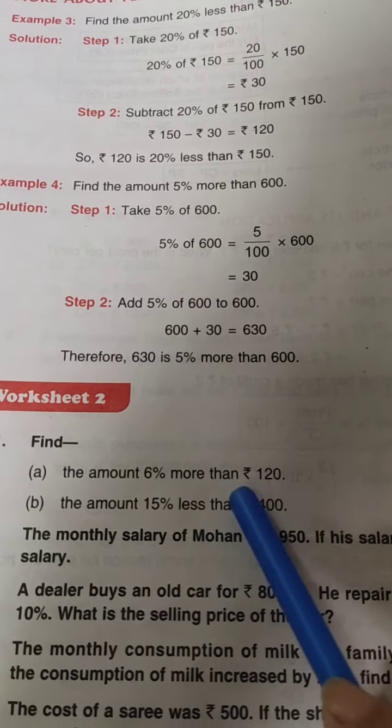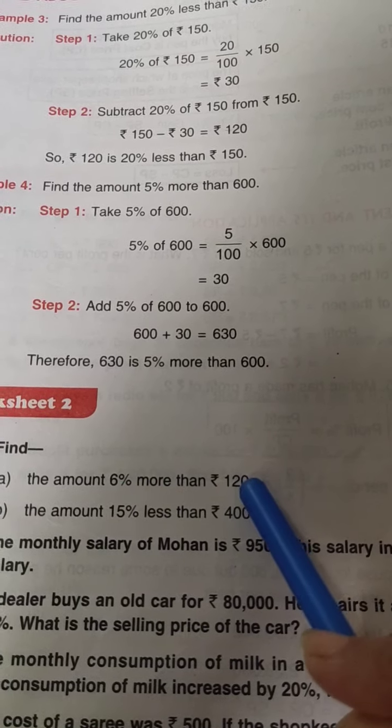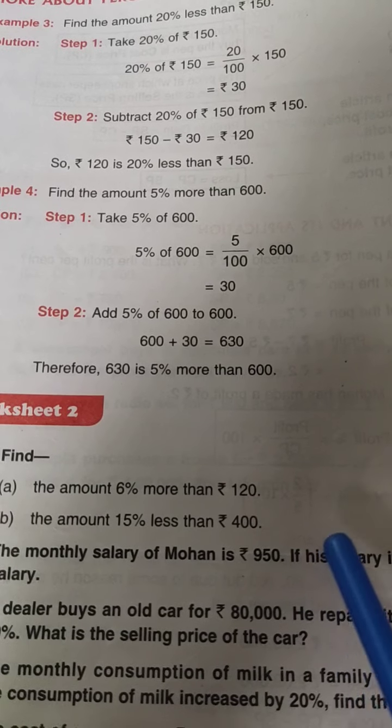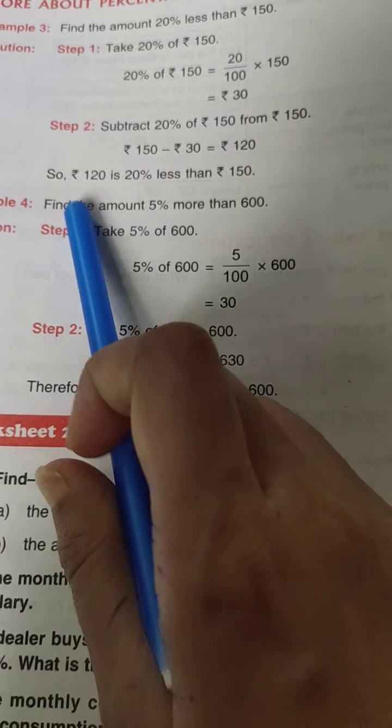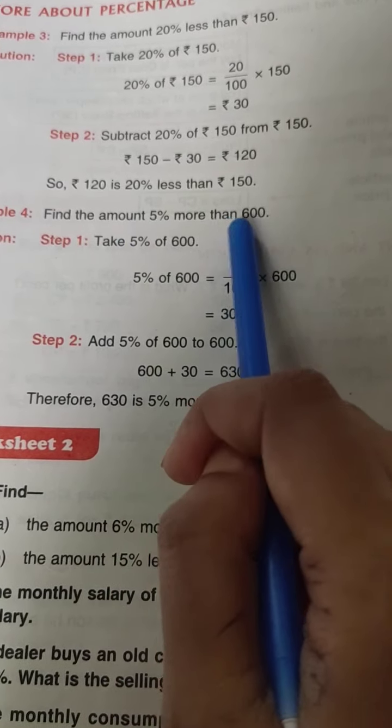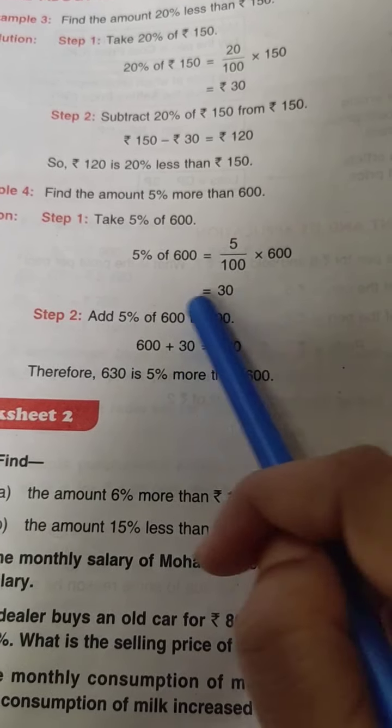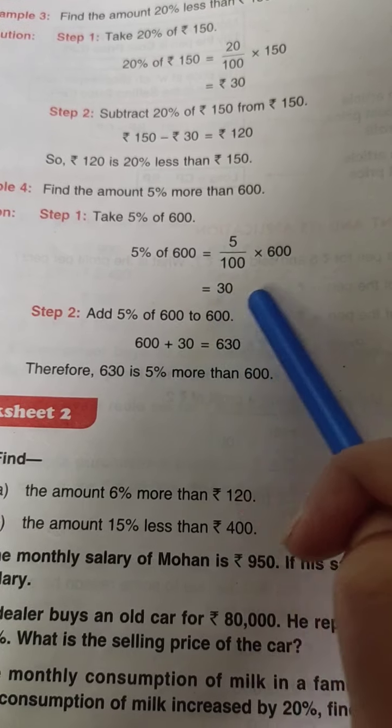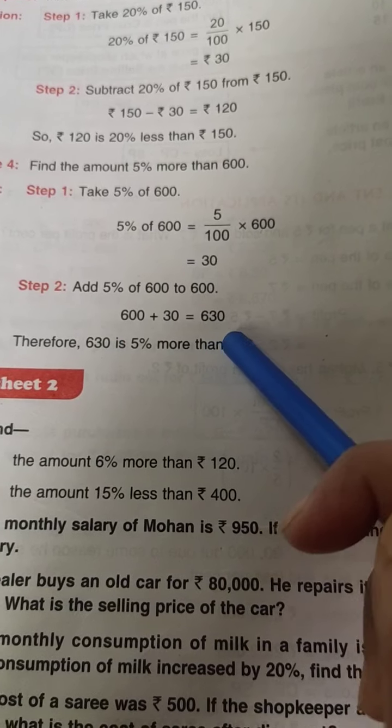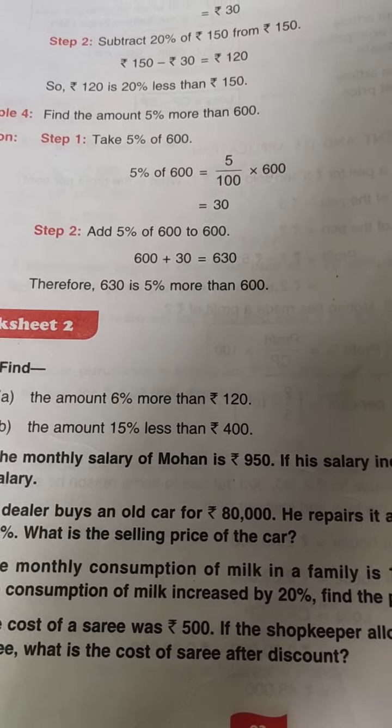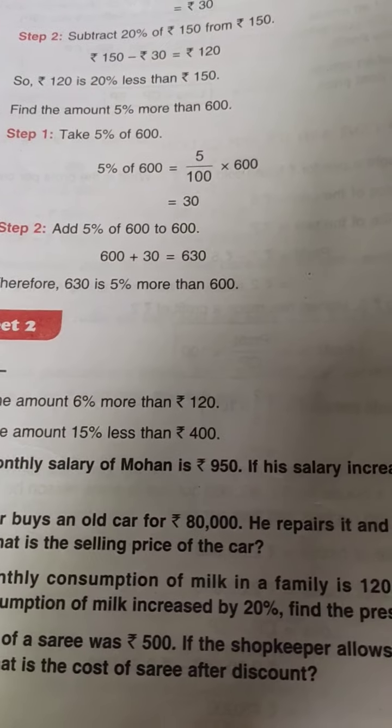So let's go through the question. The amount 6% more than 120. So what you have to do? You have to find 6% of 120, and then you will add that result with 120. As it is done in the examples. Find the amount 5% more than 600. First we have to find 5% of 600, and then we have to add 30—I mean obtained result—with the given number. 600 plus 30. So in this way you can do worksheet 2 also. Very few questions are there, 5 questions are there.